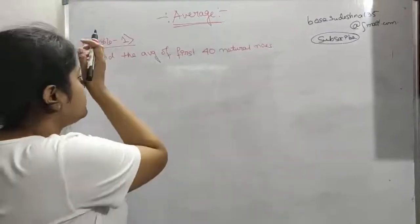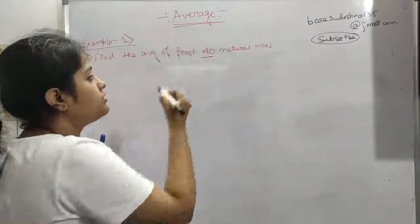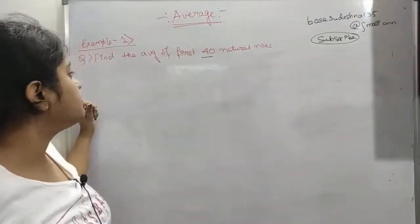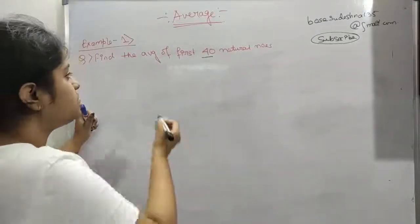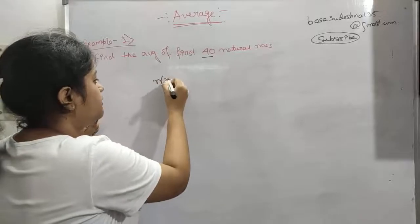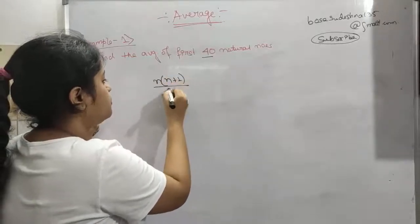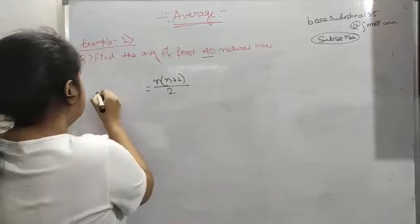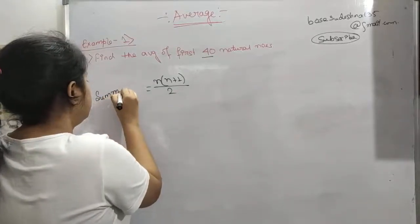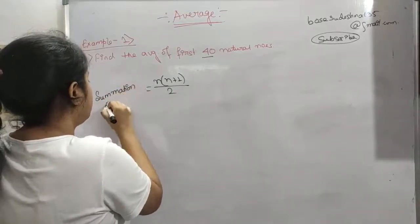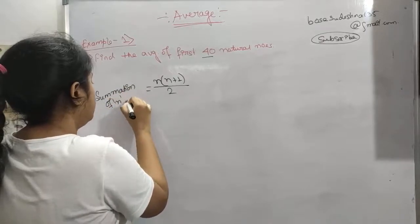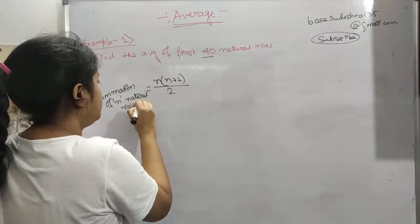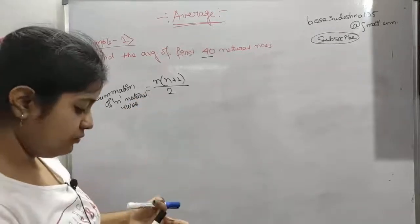Now let us see the first example: find the average of 40 natural numbers. We can find the sum of 40 natural numbers using the formula n(n+1)/2 — this is the summation of n natural numbers. This is a very important formula, please write it down.